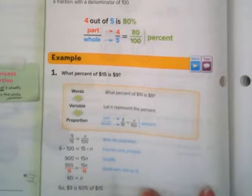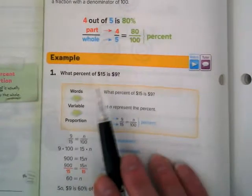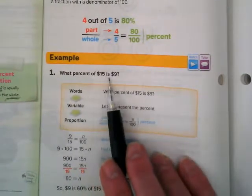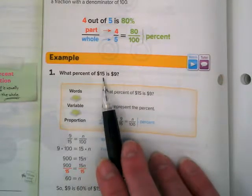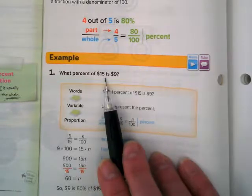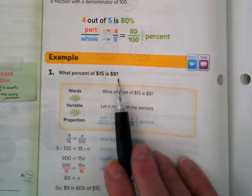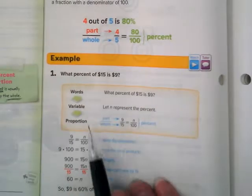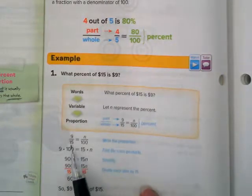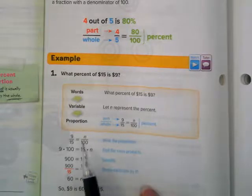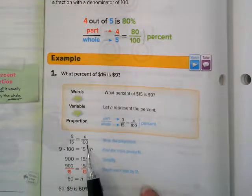Okay, so what percent of $15 is $9? What's right after 'of'? So 15 is the whole and 9 is the part. So if we're looking at setting up this problem, we would do 9 over 15 is equal to something over 100, because what's always the whole when we're doing percents?